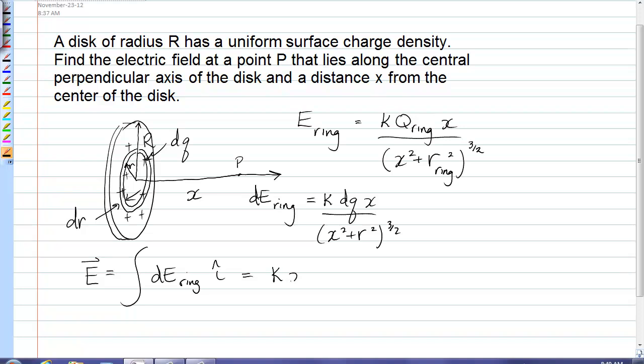k can come out, x can come out because that remains constant even as I expand that ring, i hat, and I end up having to integrate dq over x squared plus r squared to the three halves.